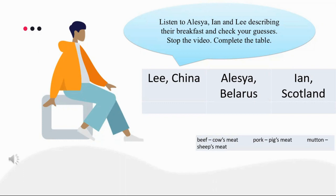I'm Alessia. I live in Belarus. My breakfast is usually scrambled or boiled eggs, a piece of bread with cheese and ham, and a cup of tea. Sometimes I have a plate of kasha with a glass of milk.